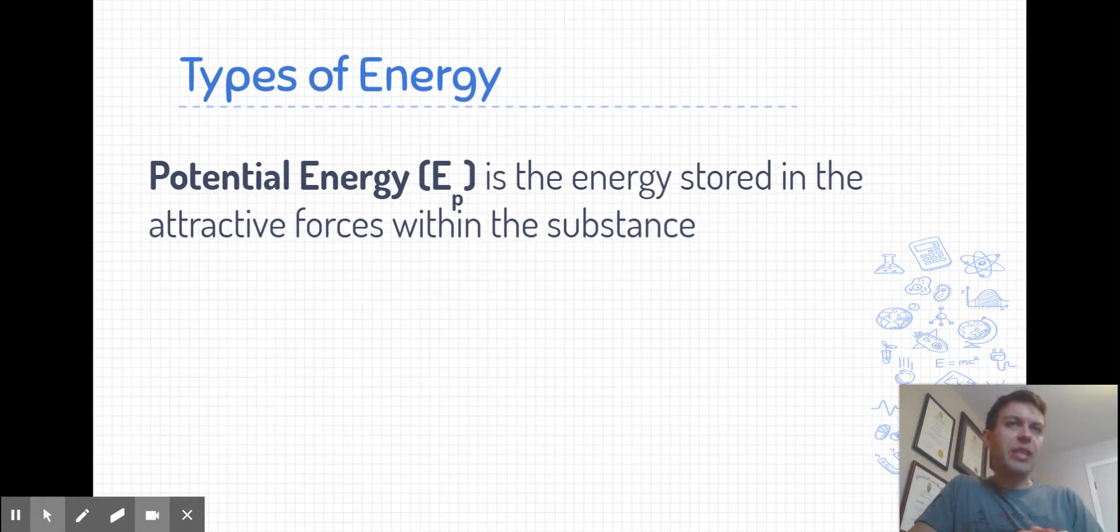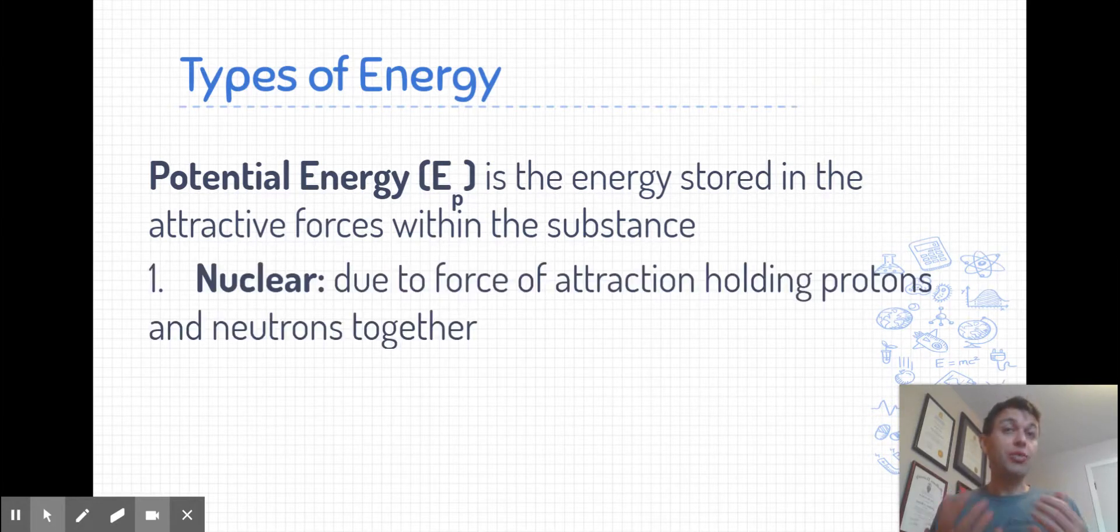Our first type of energy is potential energy. Potential energy in the context of chemistry is referring to the energy that's stored in those attractive forces within a chemical substance. Our first type of potential energy is the nuclear energy. So that's the energy that's holding the nucleus together. And this is an immense amount of energy that's held in a single nucleus relative to the size of that nucleus.